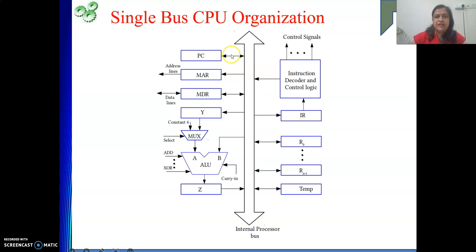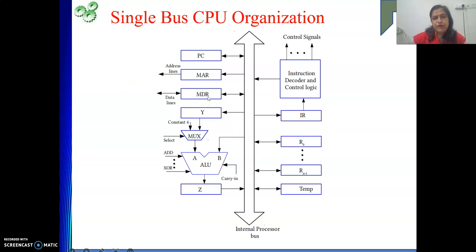The PC is bi-directional because the value of PC is given to MAR via the bus, then the incremented value of PC will go from ALU back to PC — that's why it's bi-directional. MAR takes an address and gives it to the memory module. MDR handles both read and write, holding data coming from memory or going to memory for a store operation.